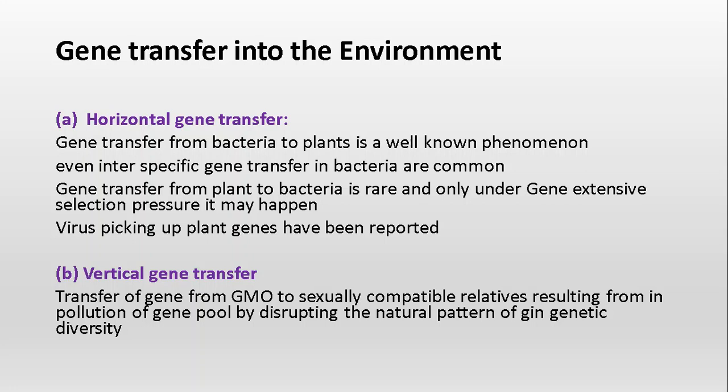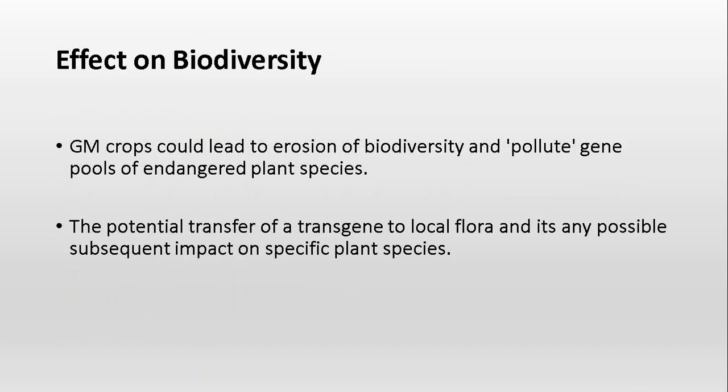Vertical gene transfer occurs when a GMO is sexually compatible with the same species and reproduces with it, resulting in a population with altered gene pool by disrupting the natural pattern of genetic diversity. The species produced through this reproduction is the result of vertical gene transfer.